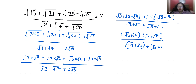Now I am going to use substitution. Let A = √5 + √7 and B = √3 + √5. So the expression becomes A·B divided by (A + B).